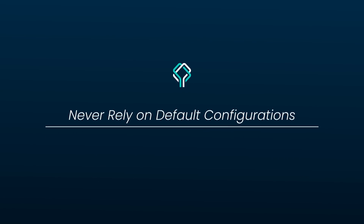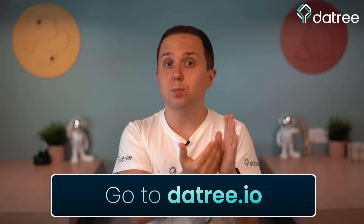I hope I've convinced you to custom-define your probe fields and ensure you always have a configuration that fits your application, never relying on Kubernetes defaults. To help with this, you can use Datree — an open-source solution that scans every Kubernetes manifest file and your cluster, identifying liveness and readiness probes where you haven't defined the custom fields. Check it out at datree.io.